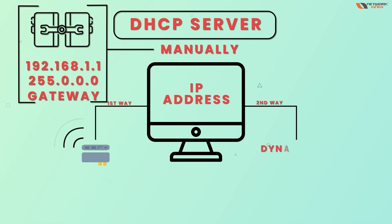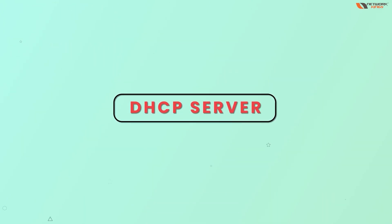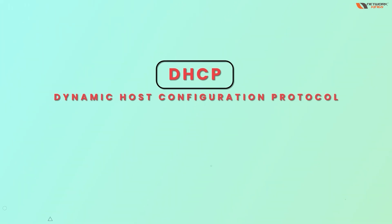The second way to provide an IP address to a PC or any device is dynamically. Dynamically means you are not providing an IP address manually — instead you use a protocol or service. The service used to provide an IP address dynamically is known as DHCP, which stands for Dynamic Host Configuration Protocol.